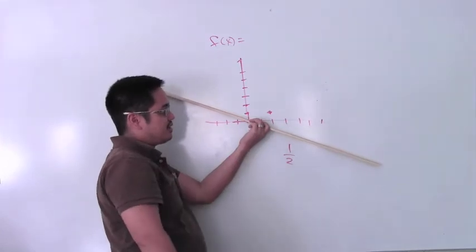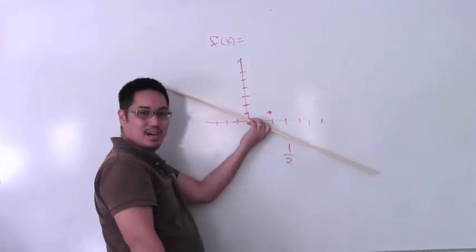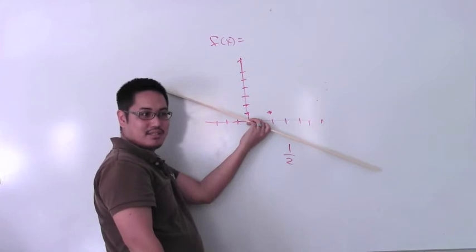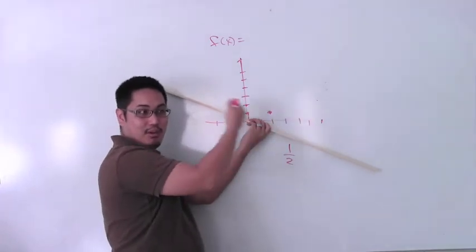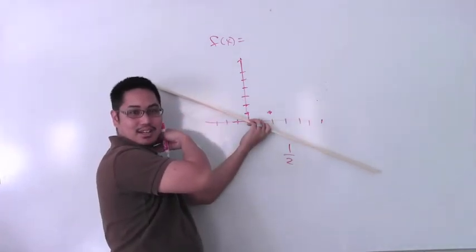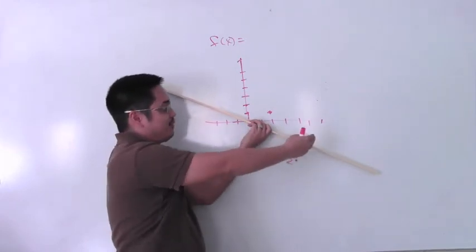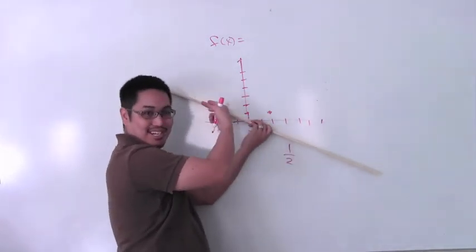I guess you can kind of think of this as, you could kind of see this as going up. Right? If you're Japanese. Japanese read from right to left. Right? So they read from right to left, so I guess if you're going from right to left, you'd be going up in this case.